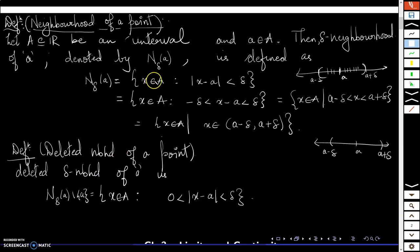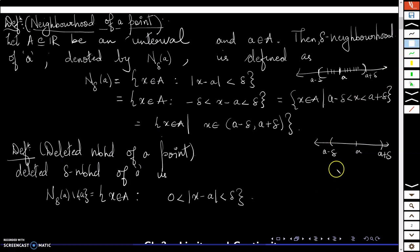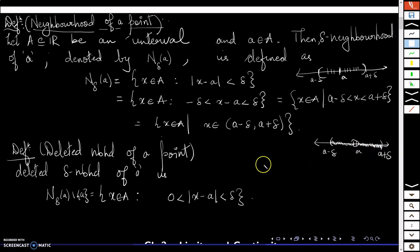The only difference between a neighborhood and a deleted neighborhood is that in the deleted neighborhood we remove the point a — that is the central point. So other than a, all the points are there. All those points form the deleted neighborhood of a.